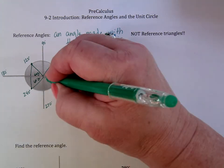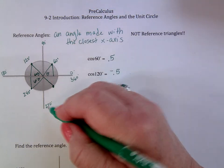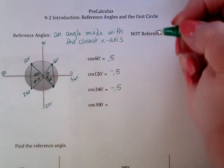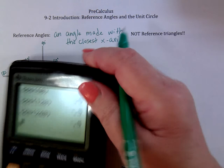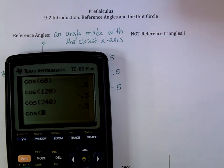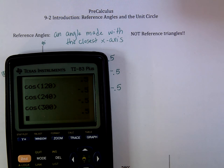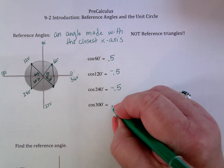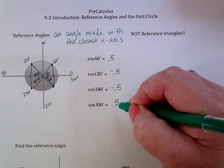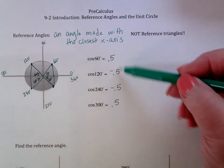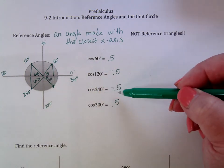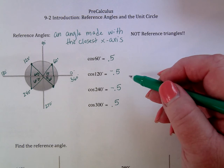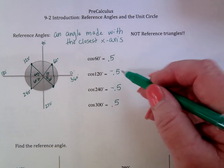If I go to 300 degrees, that's between 270 and 360, and its distance from the x-axis is 60 degrees again. The cosine of 300 degrees is a positive 0.5. So those reference angles — you can use them to calculate values at all sorts of different places. If the reference angles are the same, your values are going to be the same. The only difference is whether they're positive or negative.